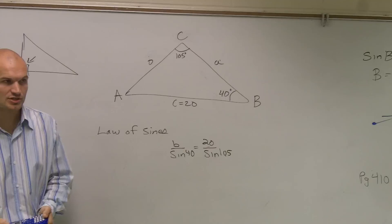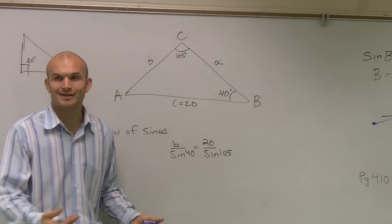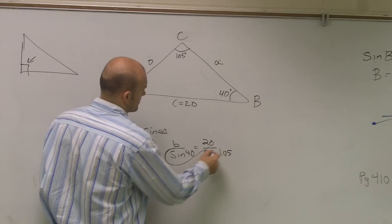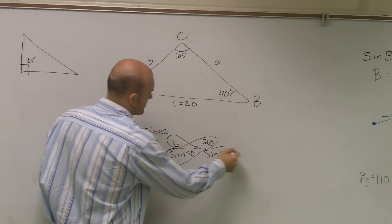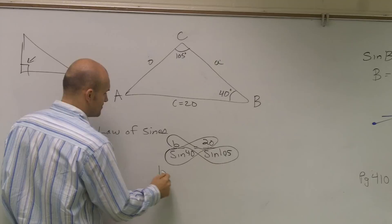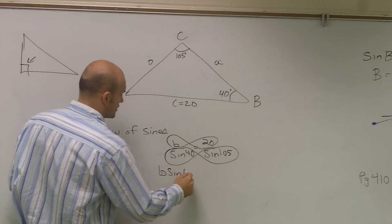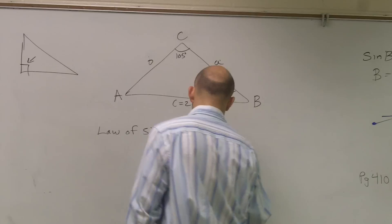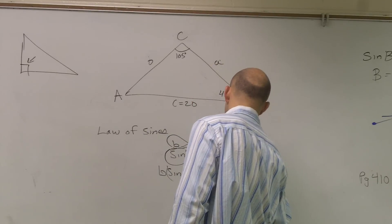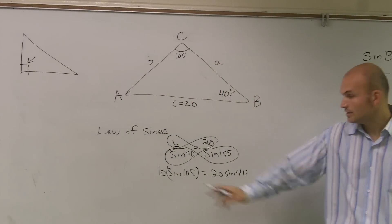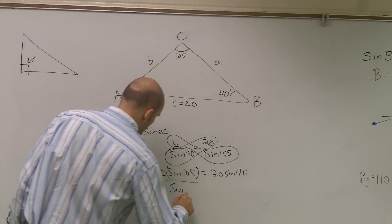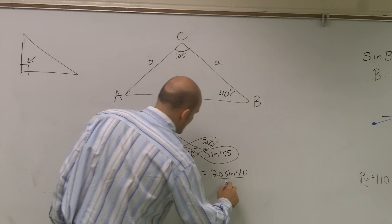A very simple way to solve a proportion is to cross multiply. When I do that, I get B sine of 105 equals 20 times sine of 40. Now to solve for B, I'll divide by sine of 105 on both sides.